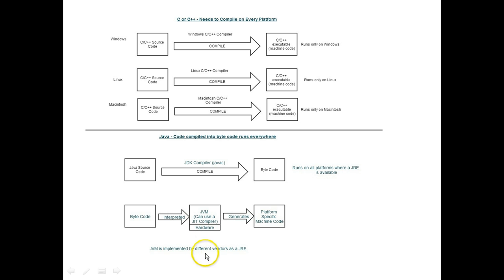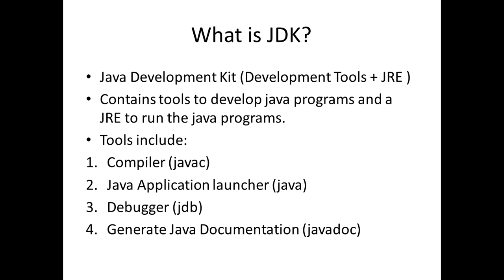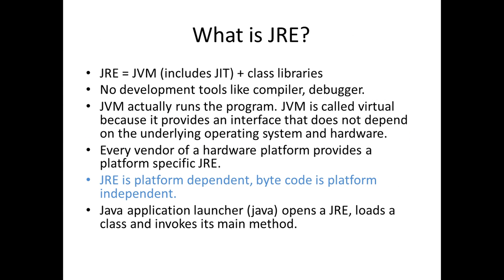The JVM is implemented by different vendors as a JRE. To reiterate: the JDK contains the JRE as part of it, but also includes development tools to develop Java programs. All you need to run Java programs is the JRE, which is platform dependent and provided by each vendor.